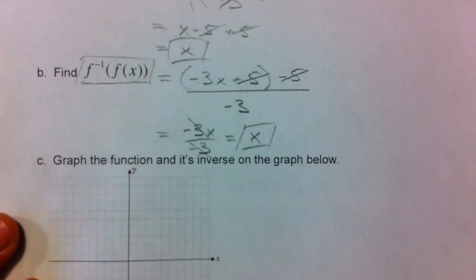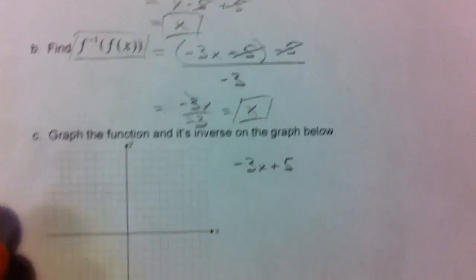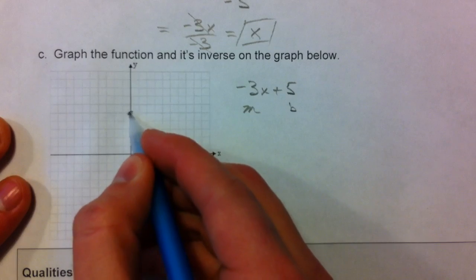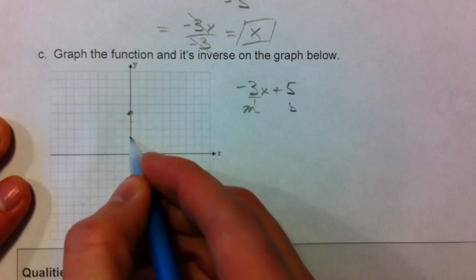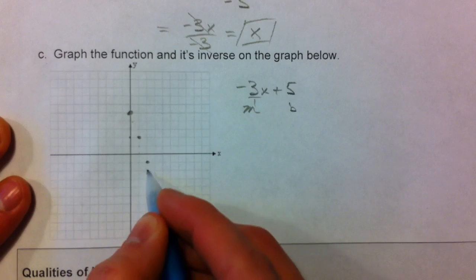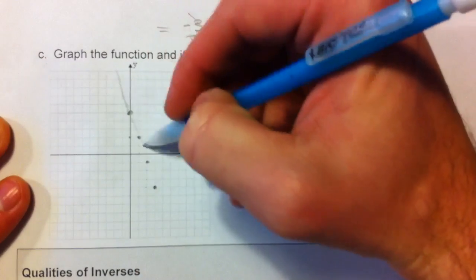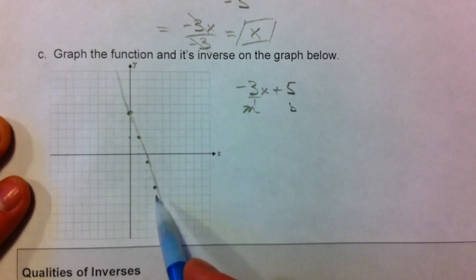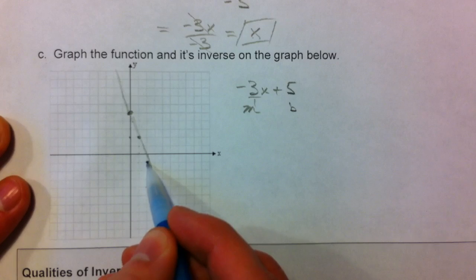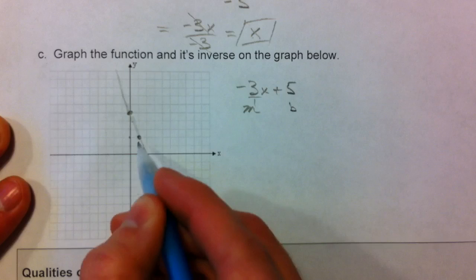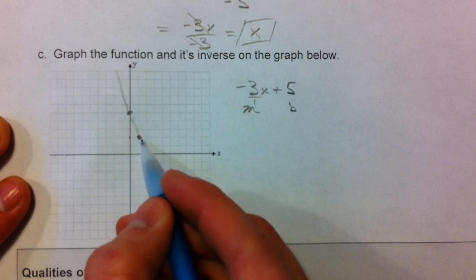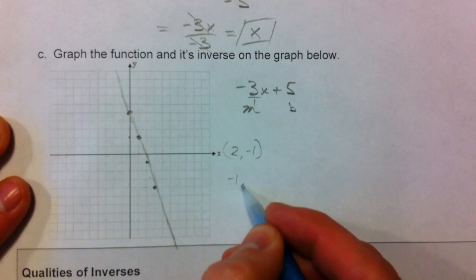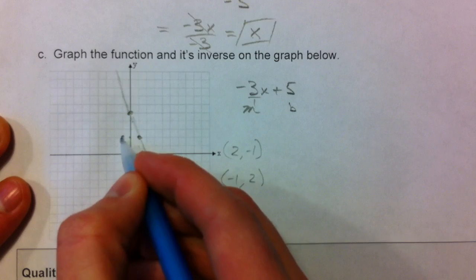Graphically, our original function negative 3x plus 5 is a line. The y-intercept is 5 and the slope is negative 3 over 1, so we go down 3 for every 1 across to graph it. For inverse functions, the x and y swap: if (2, 1) is a point on the function, then (1, 2) is a point on the inverse. If (2, -1) is a point on the function, then (-1, 2) is a point on the inverse.